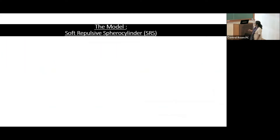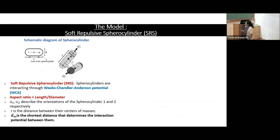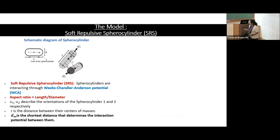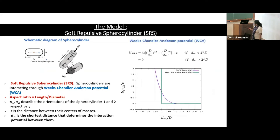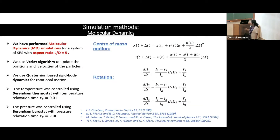We model the anisotropic active particle as a collection of spherocylinders — a geometrical shape with hemispherical caps — where the shape anisotropy is measured by the aspect ratio L/D. The only interaction between spherocylinders is excluded-volume interaction, defined by the WCA potential. We simulated the system by molecular dynamics simulation for L/D = 5, using a Berendsen thermostat for controlling temperature.